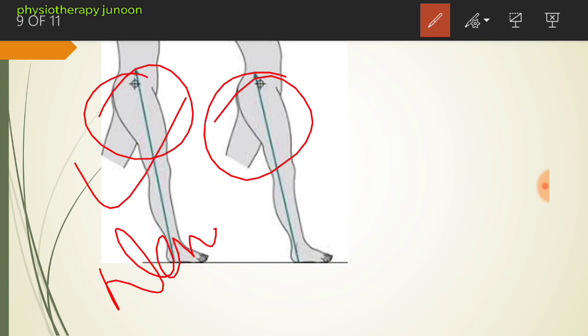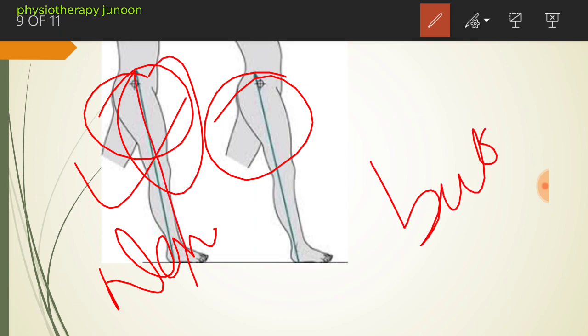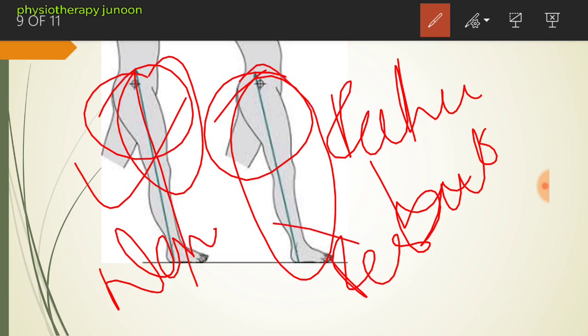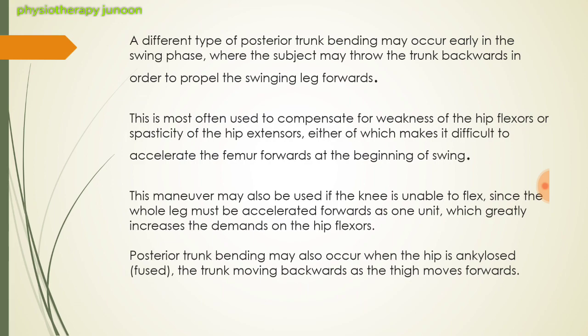In normal condition this is the position of the axis, but in pathological gait or posterior trunk bending gait, the axis position shifts. A different type of posterior trunk bending may occur early in the swing phase, where the subject may throw the trunk backward in order to propel the swinging leg forward. This is most often used to compensate for weakness of the hip flexors or spasticity of the hip extensors, either of which make it difficult to accelerate the femur forwards at the beginning of swing. This maneuver may also be used if the knee is unable to flex, since the whole leg must be accelerated forward as one unit, which greatly increases the demand on the hip flexors.